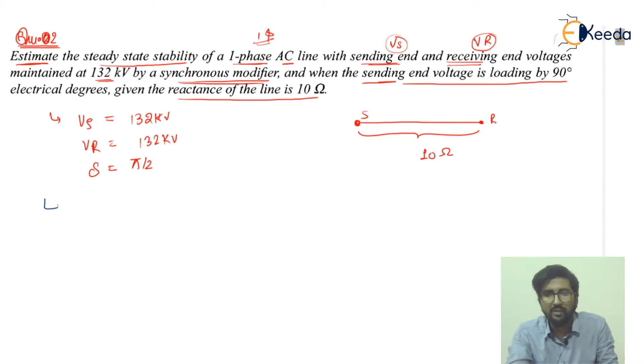Now let's start. What is it saying? It is saying the steady state stability. Steady state stability Pss is actually Vs into Vr upon X, and this is actually sine delta. And as delta is given 90 degrees, so it will be the maximum value.